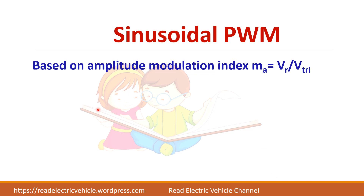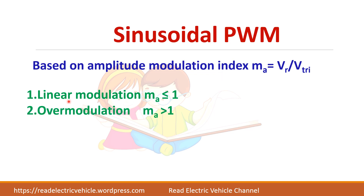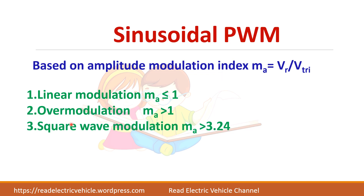In sinusoidal PWM, based on the amplitude modulation index, there are three regions: linear modulation region, over modulation, and square wave modulation. In the linear modulation region, MA is less than or equal to 1. In the over modulation region, MA is greater than 1. Square wave modulation corresponds to a very high MA value.